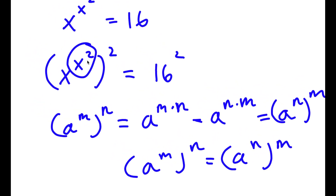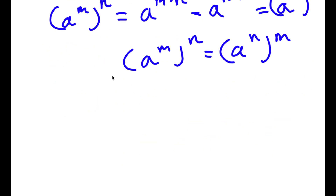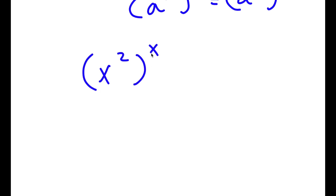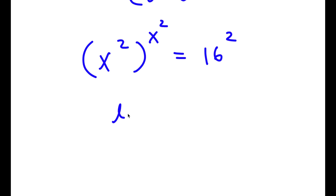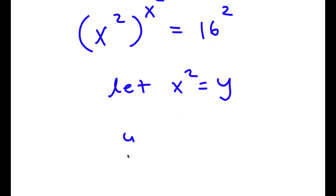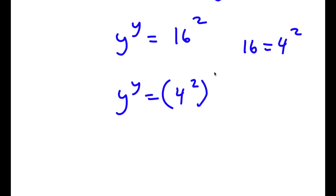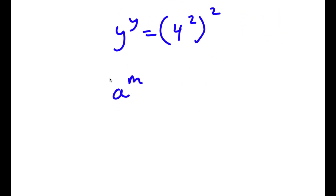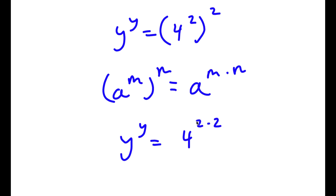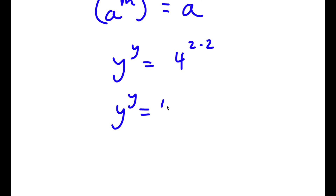So in this case, we can think of x to the power of 2 as m and 2 as n, and switching these two places gives x to the power of 2 to the power of x to the power of 2, equal to 16 to the power of 2. I'm going to let x to the power of 2 equal y. So y to the power of y equals 16 to the power of 2. Now 16 is 4 to the power of 2, so I get 4 to the power of 2 to the power of 2, which equals 4 to the power of 4.